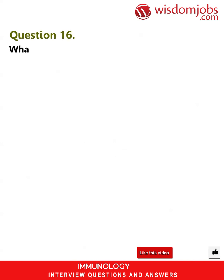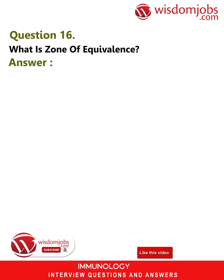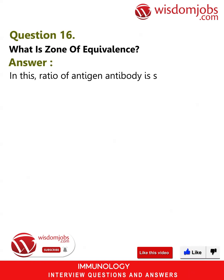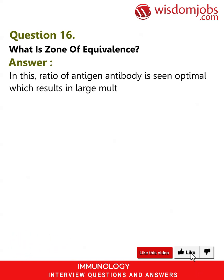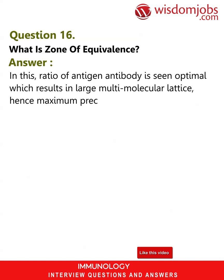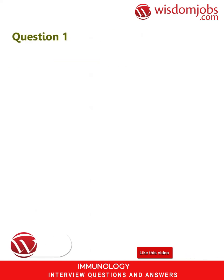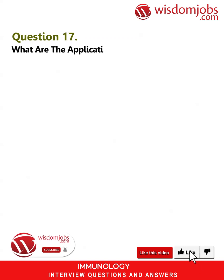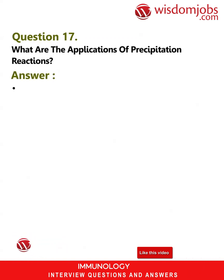Question 16: What is the zone of equivalence? Answer: In this ratio of antigen to antibody, an optimal condition is seen which results in large multi-molecular lattice formation. Hence, maximum precipitation is observed. Question 17: What are the applications of precipitation reactions?